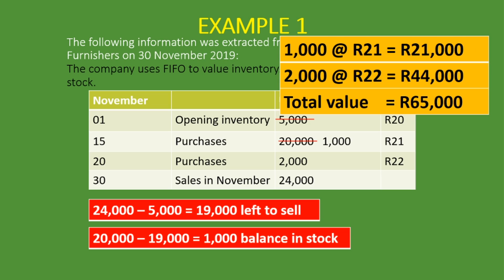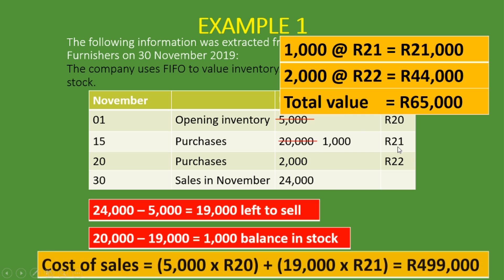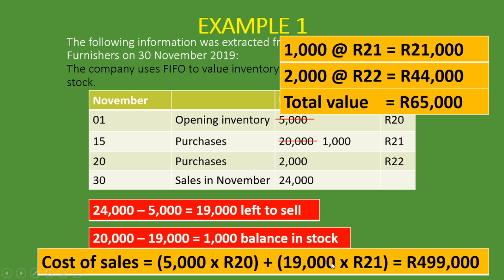Now, just for fun, what if they ask you the cost of sales? The cost of sales is the cost of all the inventory that we sold. So it's the 5,000 units at 20 Rand, plus 19,000 units at 21 Rand. That gives us: 5,000 × 20 plus 19,000 × 21 equals a cost of sales of 499,000 Rand. The main question is usually the value of closing stock, and the other common one is cost of sales.